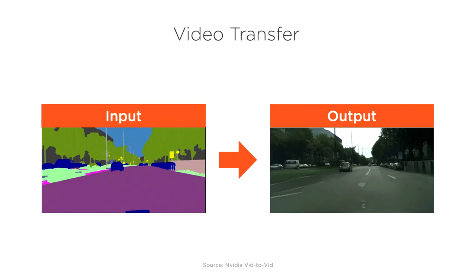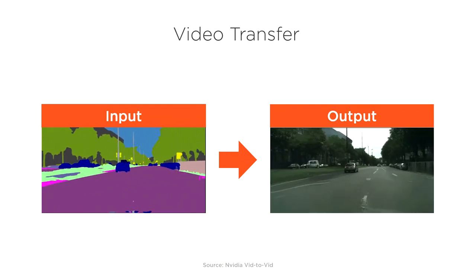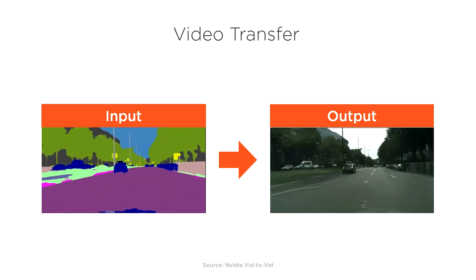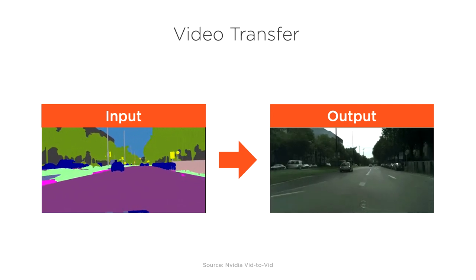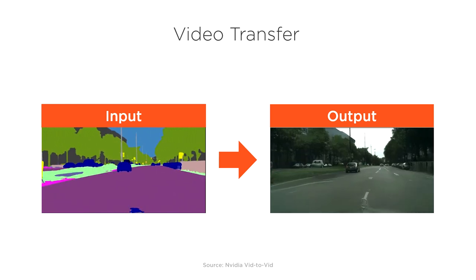For example, we can use a semantically segmented video to produce a completely new video from scratch. We provide the model with a video containing semantically labeled pixels as input, then the model produces a realistic video that represents those labels as output.